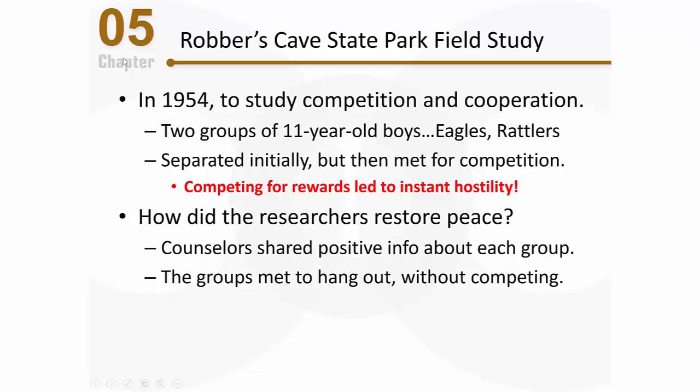The groups got together just to get to know each other — they played games, saw fireworks around the Fourth of July, and watched movies together. But they still seemed to dislike each other and failed to bond. It was easy to see because they didn't interact with one another, and when they came together to eat, they ate at separate tables. Neither approach worked.